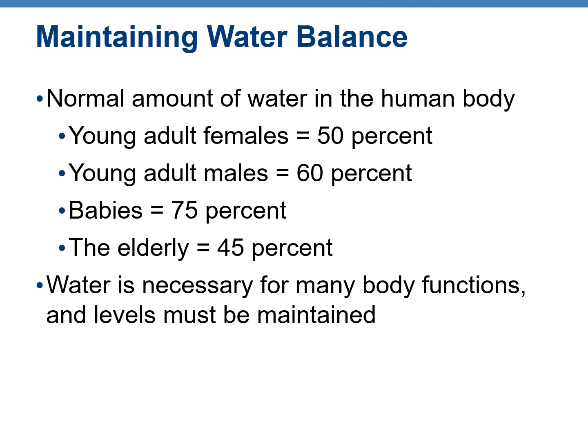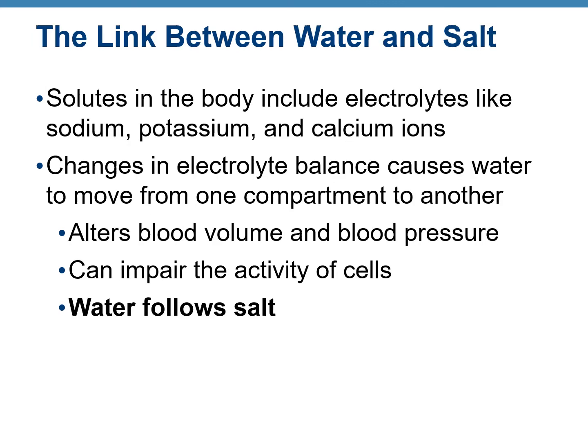The amount of water in the human body varies: in young adult females it is 50% of body weight; young adult males have more at 60%; babies have the highest at 75%; while in the elderly it is only 45%. There is a link between water and salt — the solutes in the body are ions such as sodium, potassium, and calcium. Whenever ionic concentration changes, water moves from one compartment to another, causing changes in blood volume and blood pressure. Water follows the movement of salt.